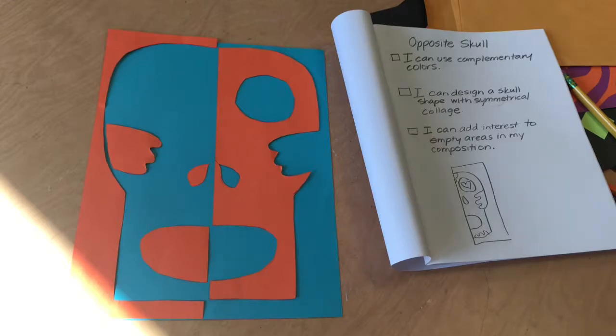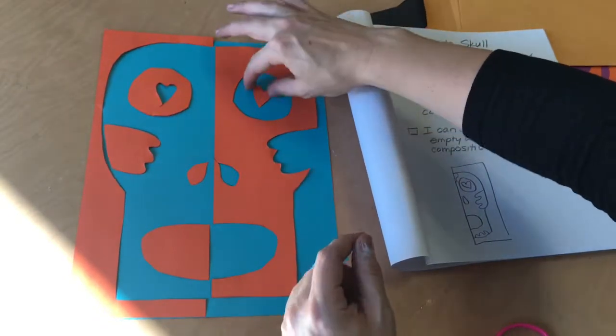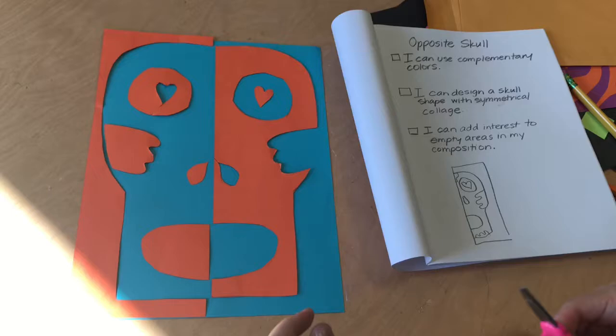Whenever you're cutting something out from the middle of a paper shape in this project, it's fine to cut a trail. See the little trail under my heart? Because it's all gonna get glued down in the end.